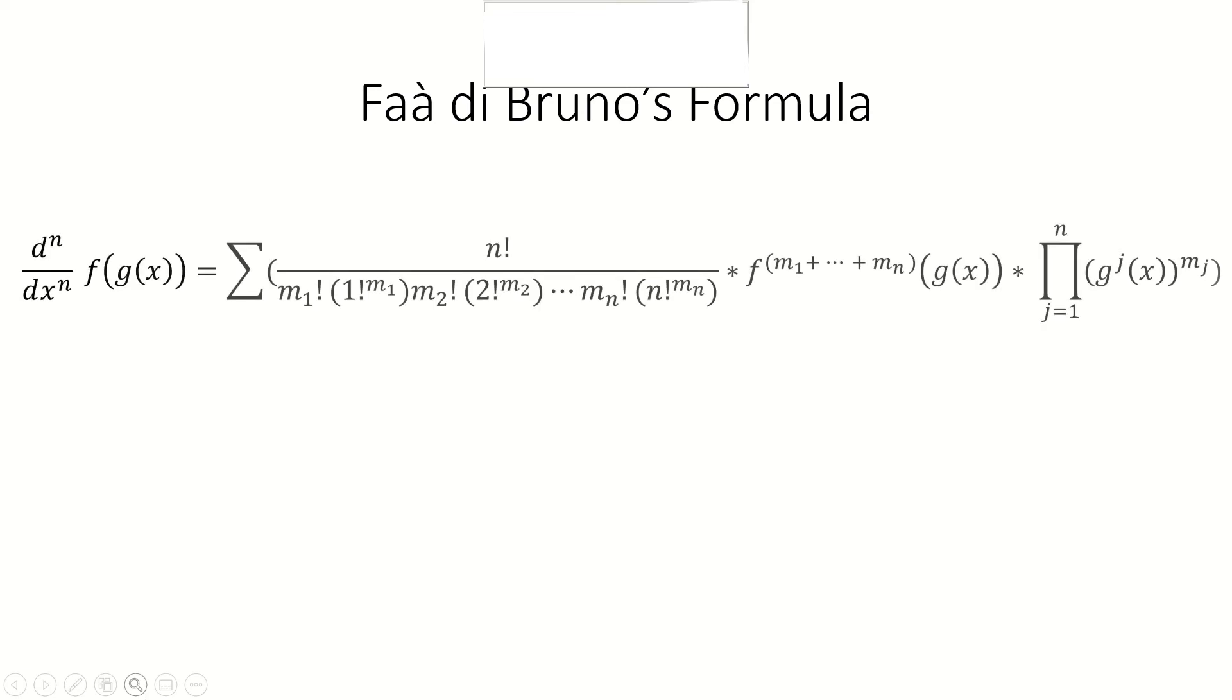Faa di Bruno's formula states that when you have a function composition f, the nth derivative is given by the following expression. Let's go over what each part of this expression means.